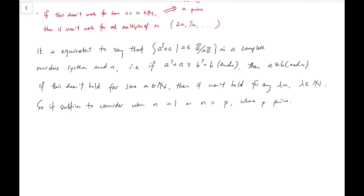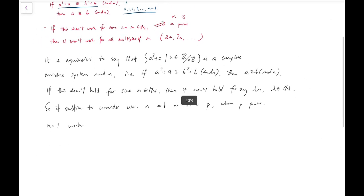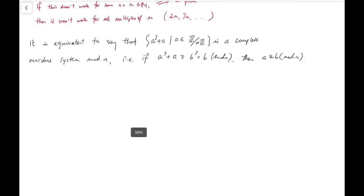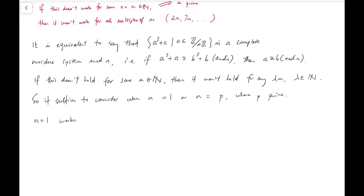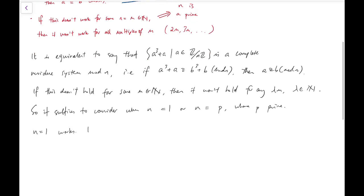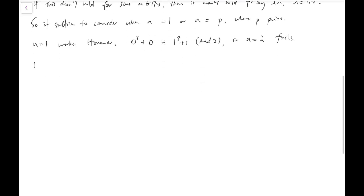We have to also consider some cases when n is not even a product of primes. Well, of course this works for n = 1. And however, 0³ + 0 is congruent to 1³ + 1 mod 2. So n equals 2 fails.